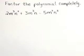Factor the polynomial completely: 2m to the third n squared plus 3m to the third n minus 5m squared n squared.